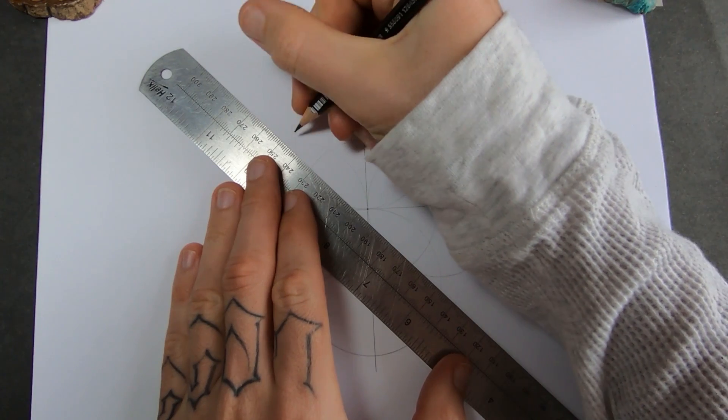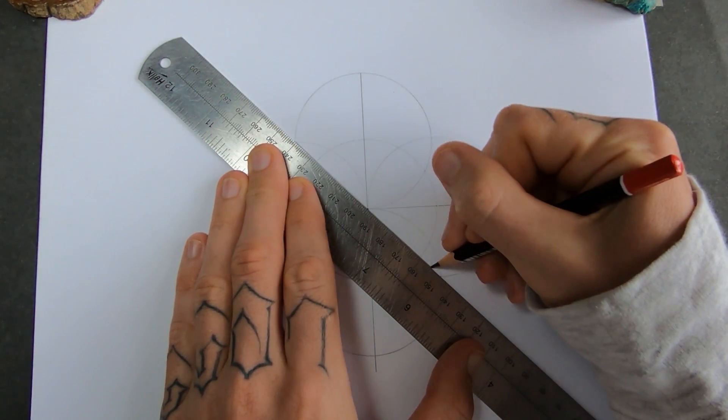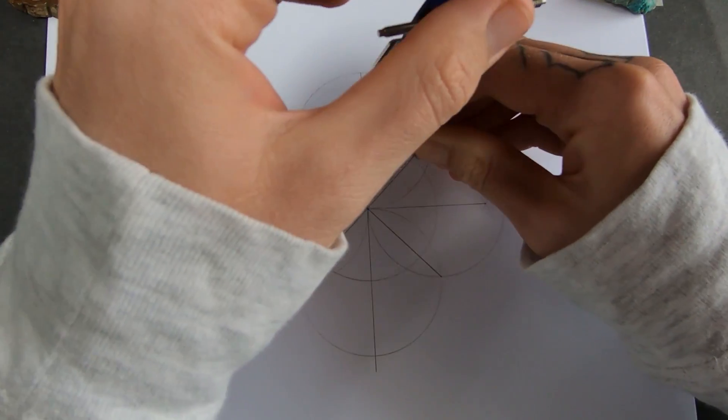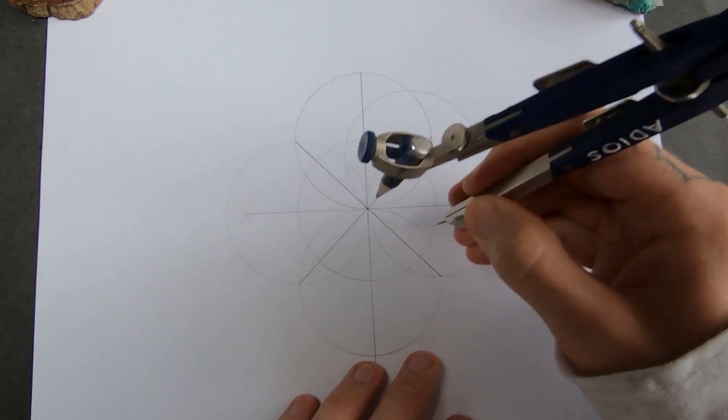So now we need to divide it into 8. And I'll do that by connecting these points where the circles cross. And now I can use these intersections where the line crosses the middle circle. I'm going to draw 4 more circles.